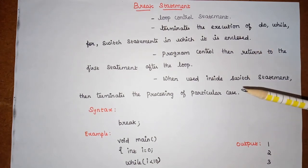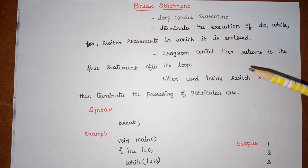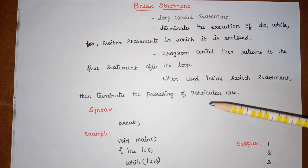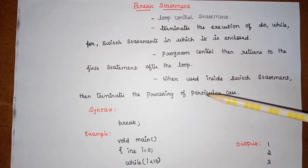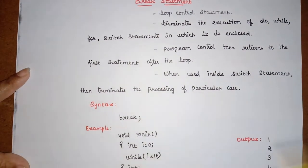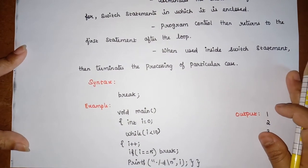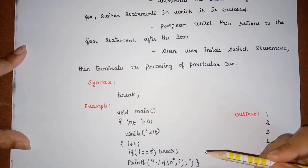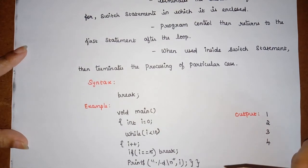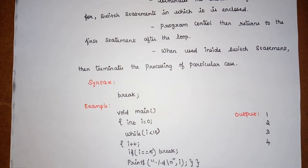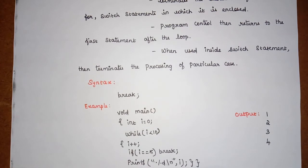When break is used in a case, that particular case will get terminated and control comes out of the switch cases. The syntax for break is very simple — just the keyword break followed by a semicolon. The break statement can only be used within do-while, while, for loops, and switch statements. It will terminate only the loop where it is present, not the remaining part of the program.